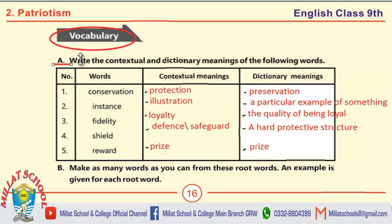Part A: Write the contextual and dictionary meanings of the following words. The words given in the first block are: conservation, instance, fidelity, shield, and reward.